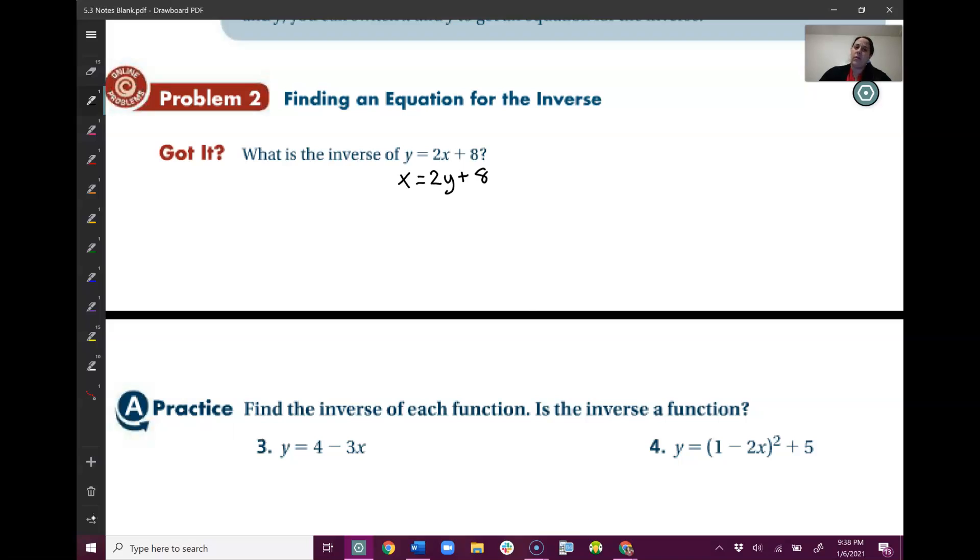Now, normally we don't write equations as x equals. That's kind of weird. We usually write equations as y equals. So what we're going to do now is solve for y. So I have x = 2y + 8. I need to solve this for y. So we need to think, am I going to get rid of the 2 or the 8 first to solve for y or get y by itself?